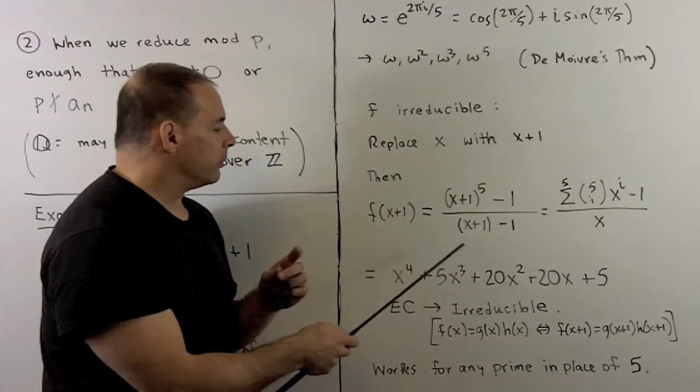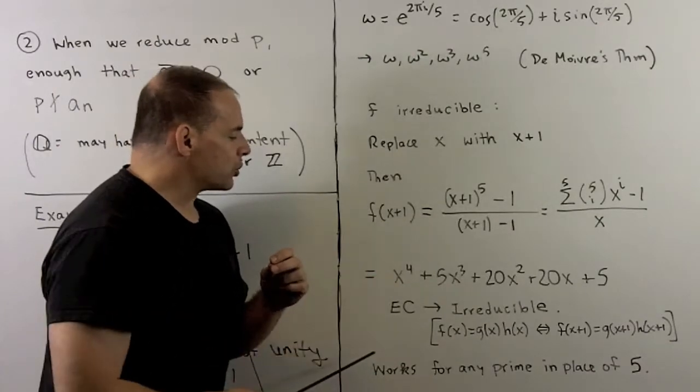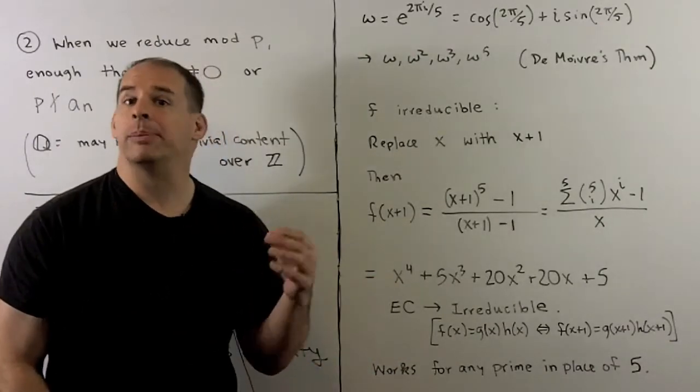Now, also note, there's nothing special about working with 5 here. This argument is going to work with any prime in place of 5.